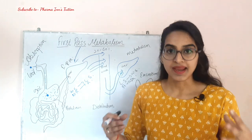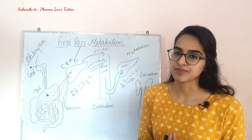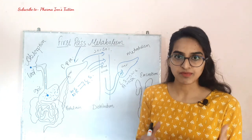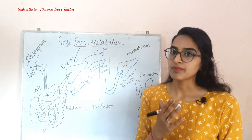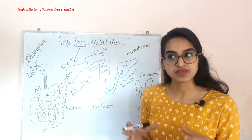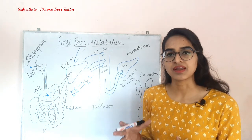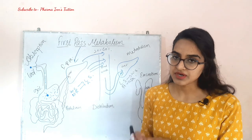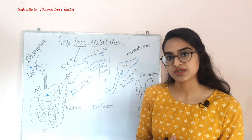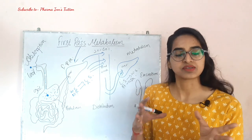There are some drugs with highly extensive first-pass metabolism and some with low first-pass metabolism. Drugs with high first-pass metabolism include propranolol, salbutamol, verapamil, and GTN (Glyceryl Trinitrate). Drugs with low first-pass metabolism include tolbutamide and benzodiazepines — their first-pass metabolism is comparatively slow.